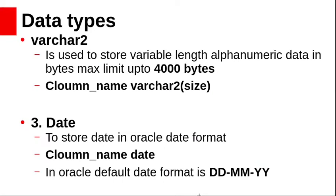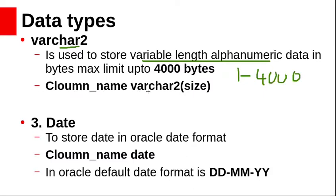VARCHAR is synonymous with VARCHAR2. To avoid possible changes in behavior, always use VARCHAR2 to store variable-length character strings. VARCHAR2 stores variable-length alphanumeric data with a maximum string length between 1 to 4000 bytes. The syntax for VARCHAR2 is: column name, VARCHAR2, size. The date data type is used to store dates in Oracle date format; its syntax is column name followed by the keyword DATE. The default date format in Oracle is DD-MON-YY.